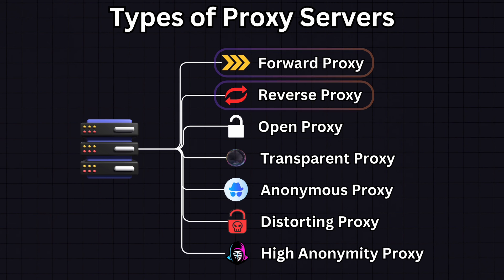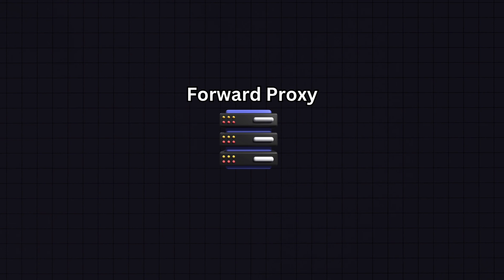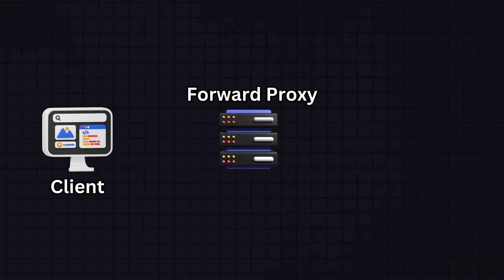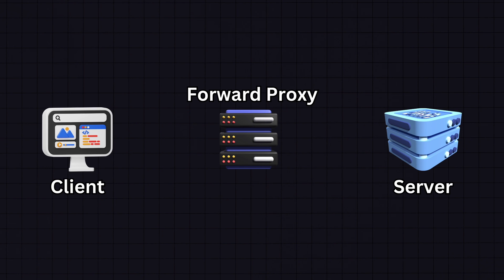The most commonly used proxy servers are forward and reverse proxies. A forward proxy acts as a middle layer between the client and the server — sitting between the client, which can be a computer on an internal network, and external servers, which can be websites on the internet. When the client makes a request, it is first sent to the forward proxy, which then evaluates the request and decides based on its configuration and rules whether to allow the request, modify it, or block it.